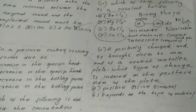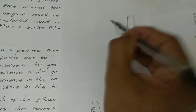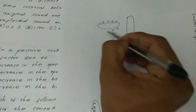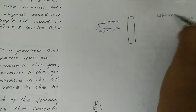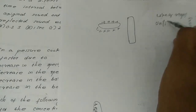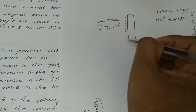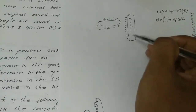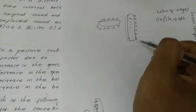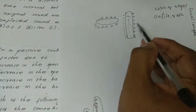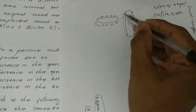Question: A positively charged rod is brought close to one end of a neutral metallic plate. What type of charges are induced on the farthest side of the plate? Like charges repel each other and unlike charges attract each other. The positive rod attracts negative charges to the near side, leaving positive charges on the far side. The induced charge on the farthest side is positive.